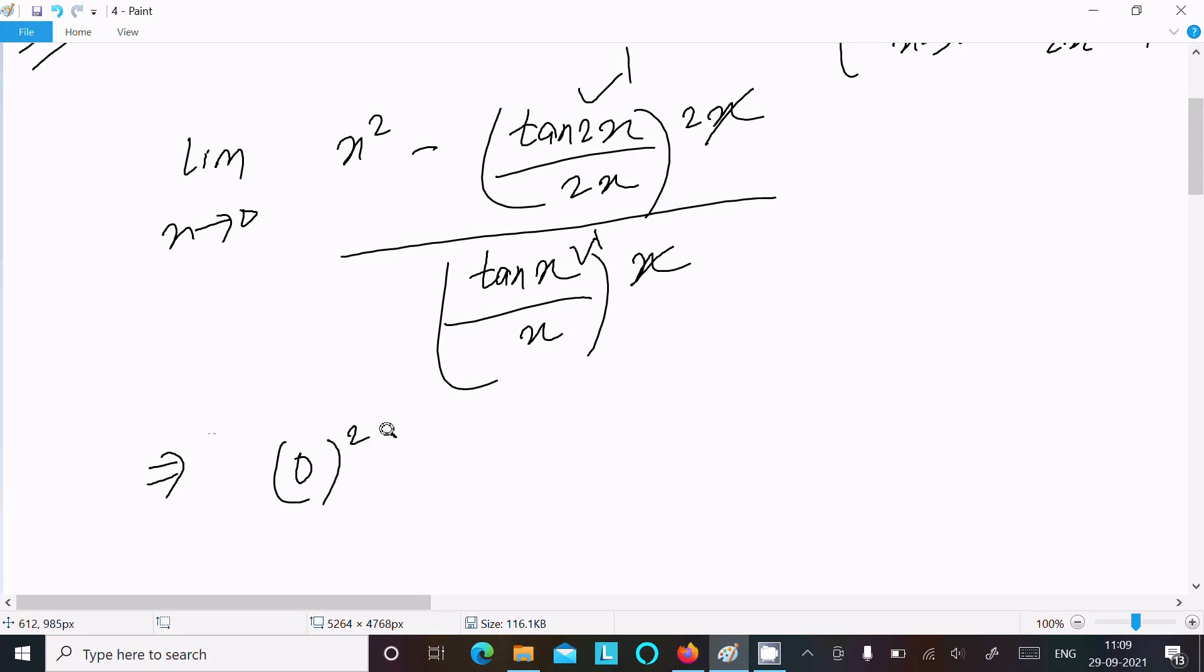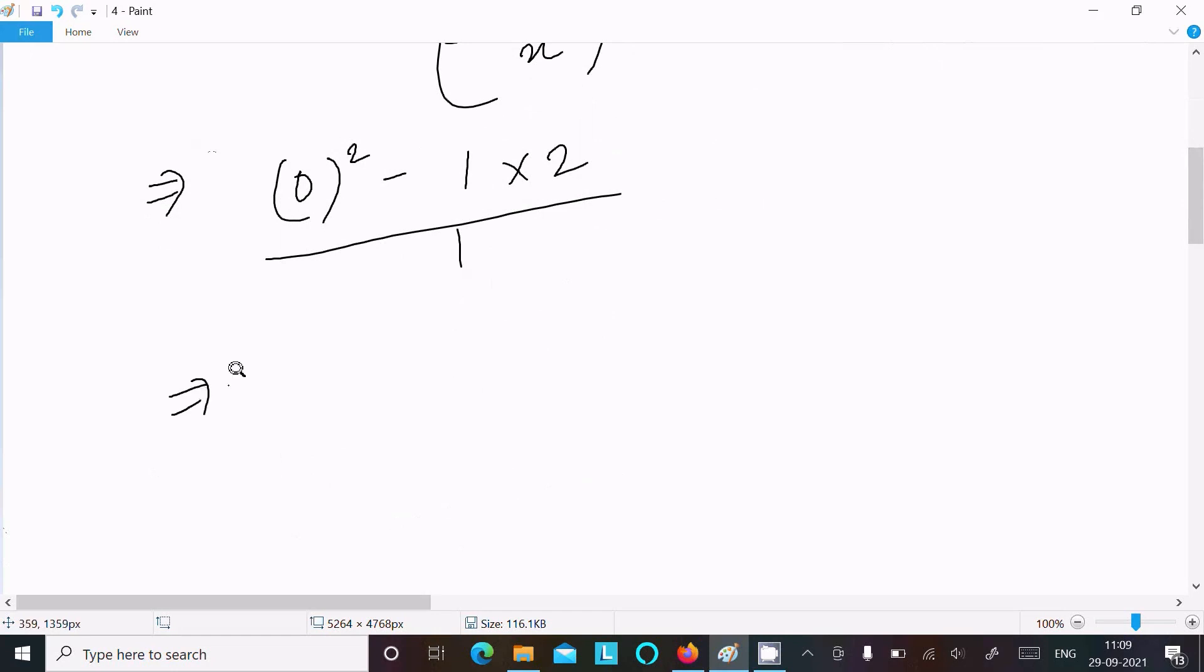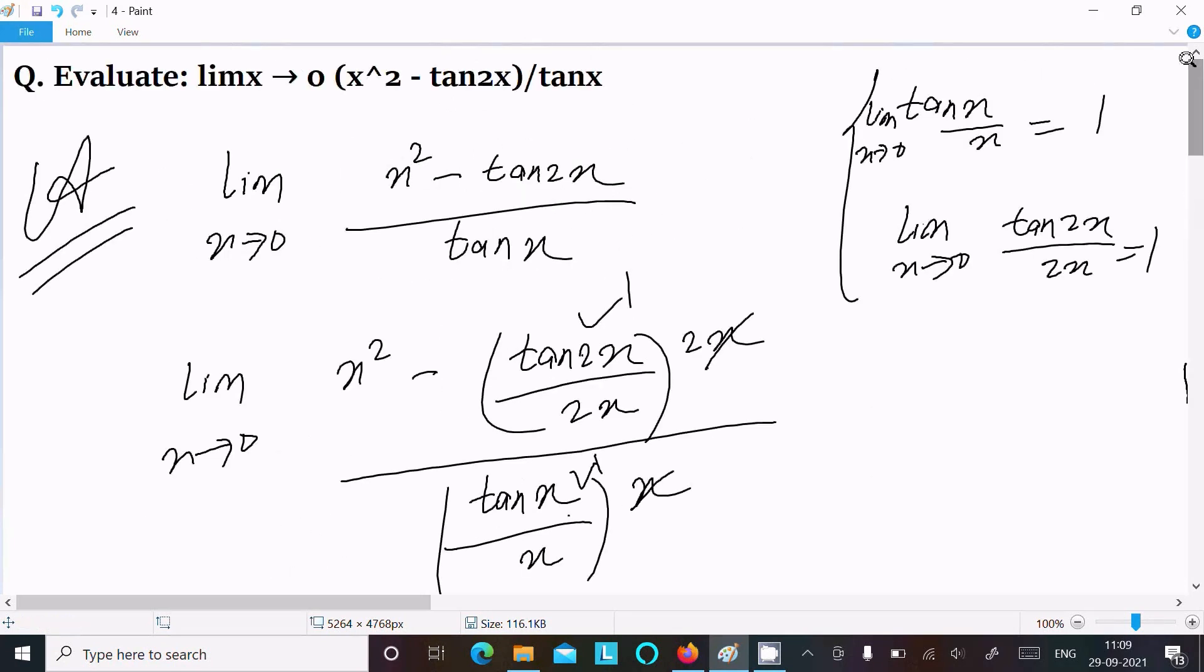After that, x tends to 0. So here, 0 squared minus this value returns 1, and this here 2 divided by this returns 1. Now, 0 squared, that is 0, 1 into 2 minus here 2 and 1. And if you calculate, this returns minus 2. So this is the answer of this limit question.